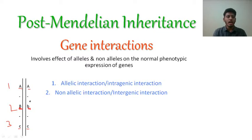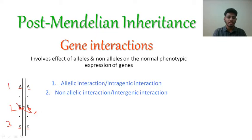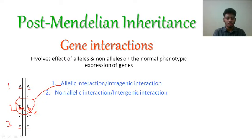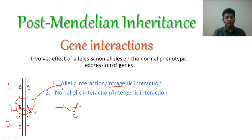But sometimes these two alleles — capital B and small b — interact together. Instead of capital B expressing alone, both of them together correspond and give another character. Neither capital B expresses completely nor small b expresses completely; they both interact and express a new character. Such interaction within a single gene where two alleles interact to give a different character is called allelic interaction, or intragenic interaction.